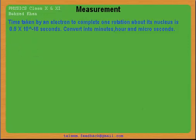Assalamualaikum. Today we are going to solve the problem: the time taken by an electron to complete one rotation about its nucleus is 0.53 into 10 to the power minus 18 seconds. Convert into minutes, hours, and microseconds.